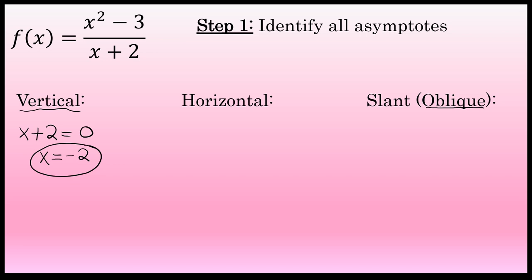A more detailed description of finding vertical, horizontal, and slant asymptotes is included in the description of this video. Horizontal asymptotes are based on the degree of the numerator and denominator. If the degree in the numerator is greater than the degree in the denominator — which is the case here, degree 2 versus degree 1 — there are no horizontal asymptotes.